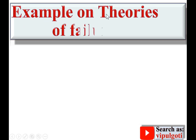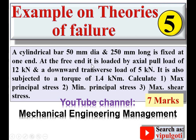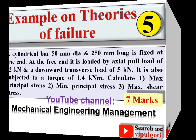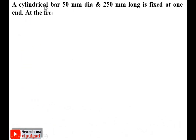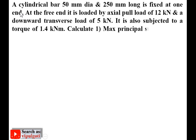Today we are going to discuss an example on theories of failure, part 5. Welcome to my YouTube channel, Mechanical Engineering Management. Let us take the description first: a cylindrical bar 50 mm diameter and 250 mm long is fixed at one end.